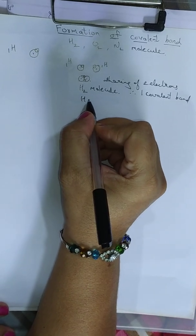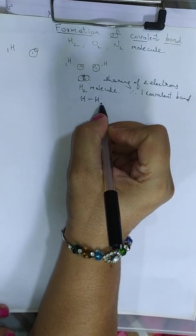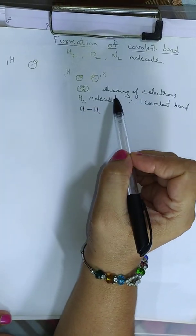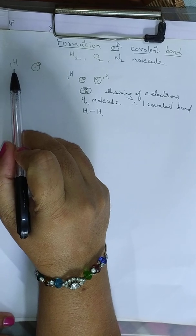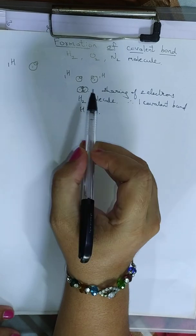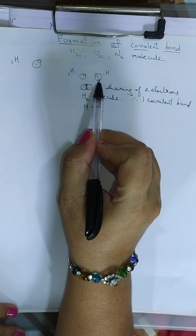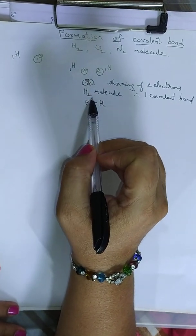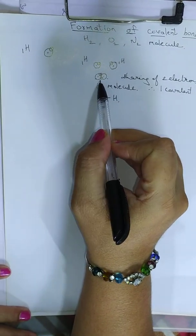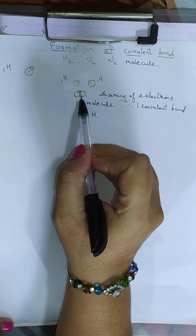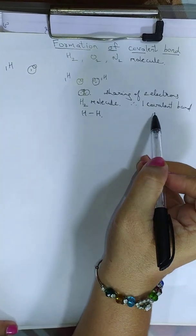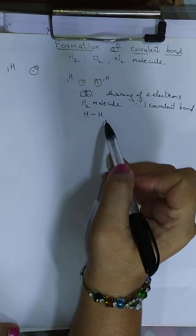It is denoted as H — 1 covalent bond — H. Covalent bond is formed by sharing of electrons. Hydrogen has atomic number 1, with only 1 electron and 1 orbit. We need 2 hydrogen atoms for making the hydrogen molecule; both do not have their duplet complete. Hence, they come together, share their electrons, their duplet is completed, and by sharing 2 electrons, 1 covalent bond is formed — that is, hydrogen molecule is formed.